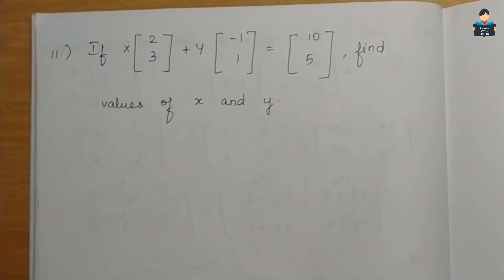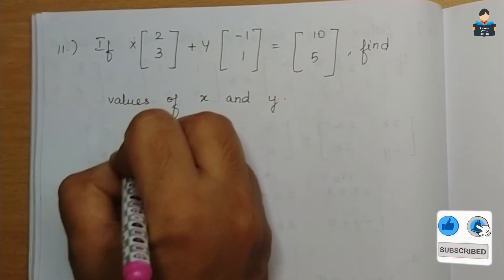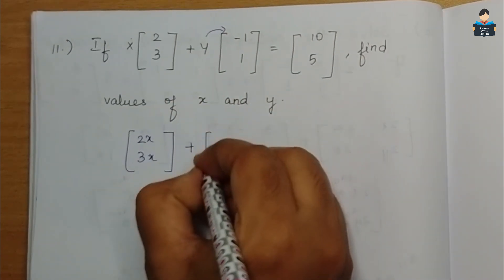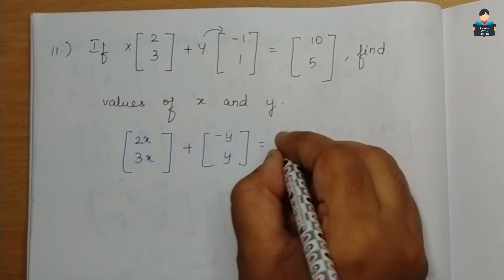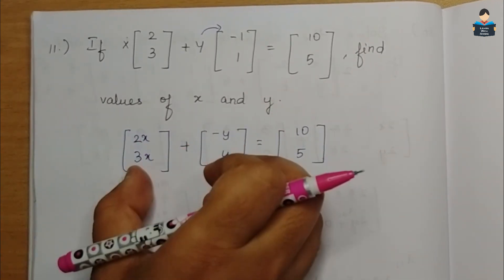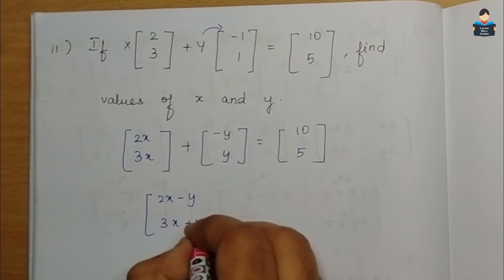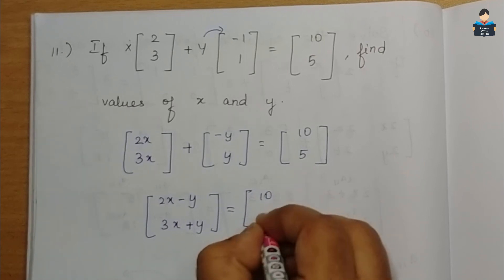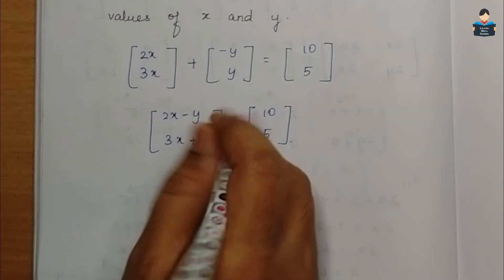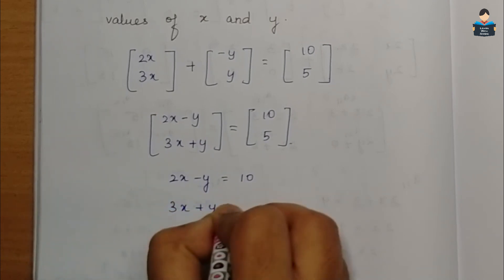First, we multiply x into the matrix [2, 3] and y into the matrix [-1, 1], set equal to [10, 5]. This gives us 2x minus y equal to 10 and 3x plus y equal to 5.